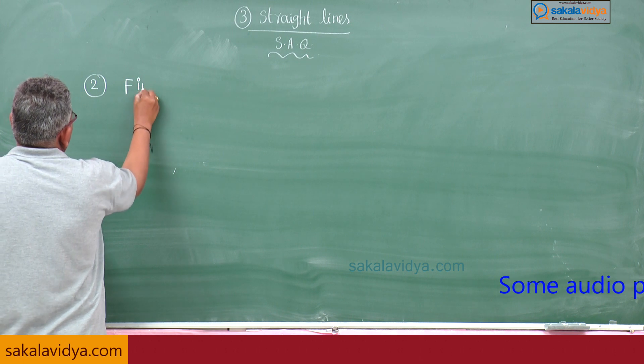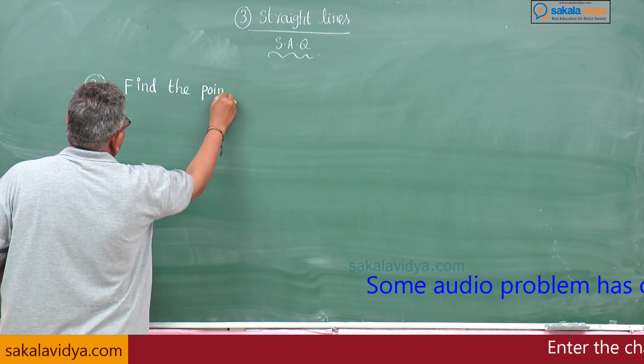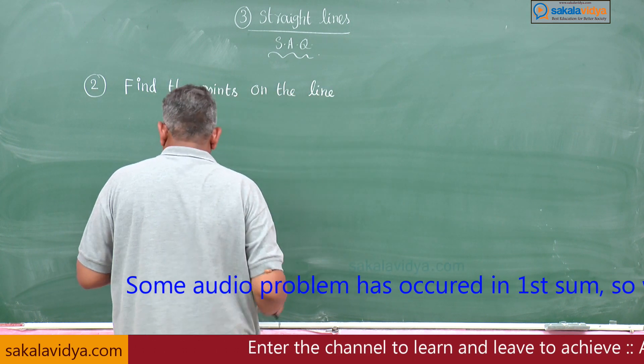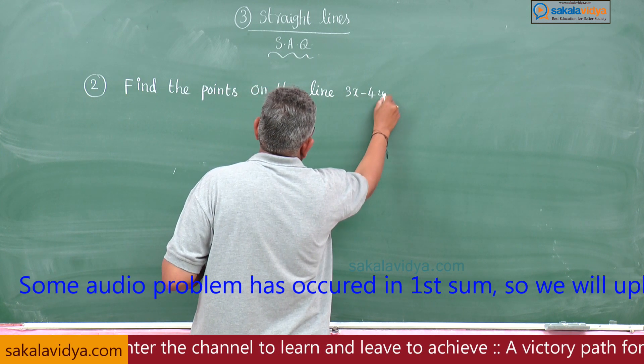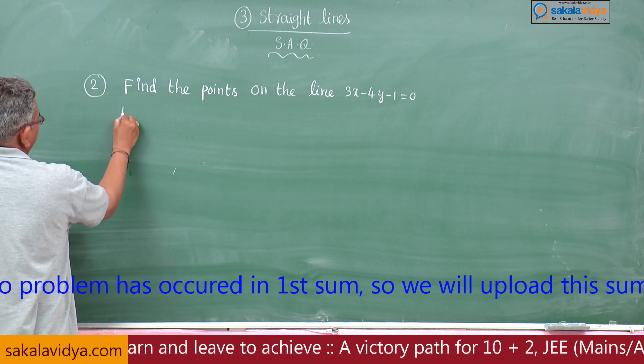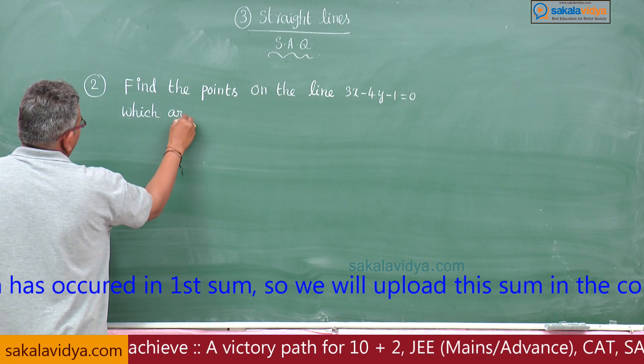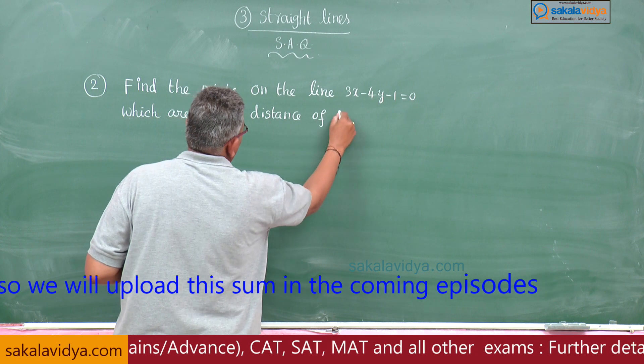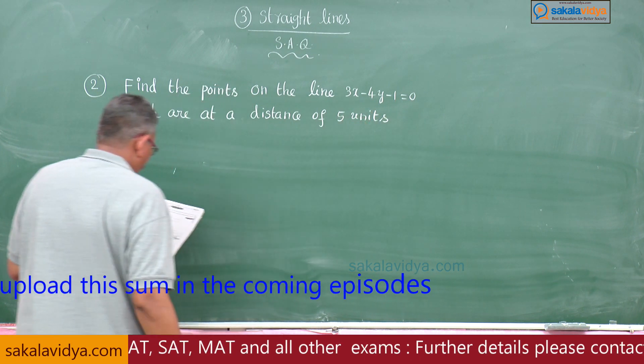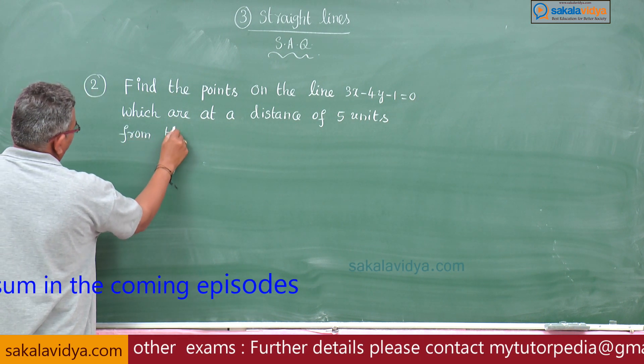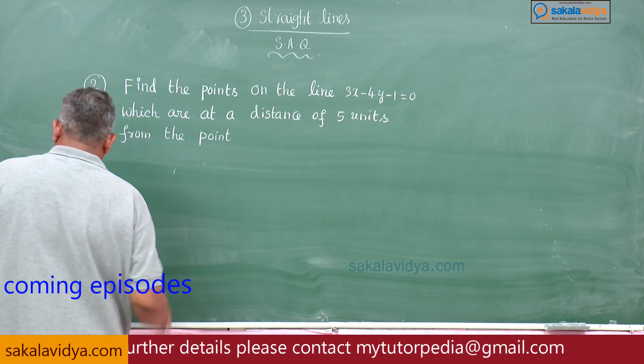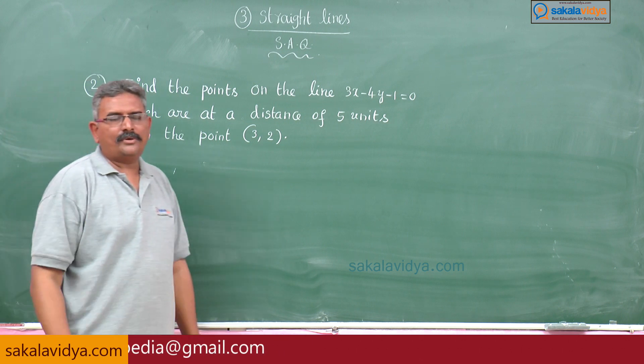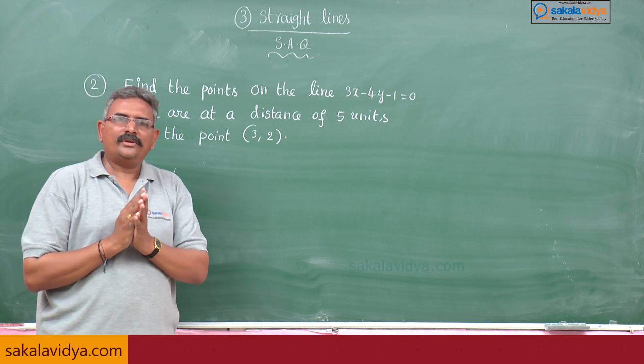Find the points on the line 3x minus 4y minus 1 equals 0 which are at a distance of 5 units from the point (3, 2). This problem is related to parametric equations.